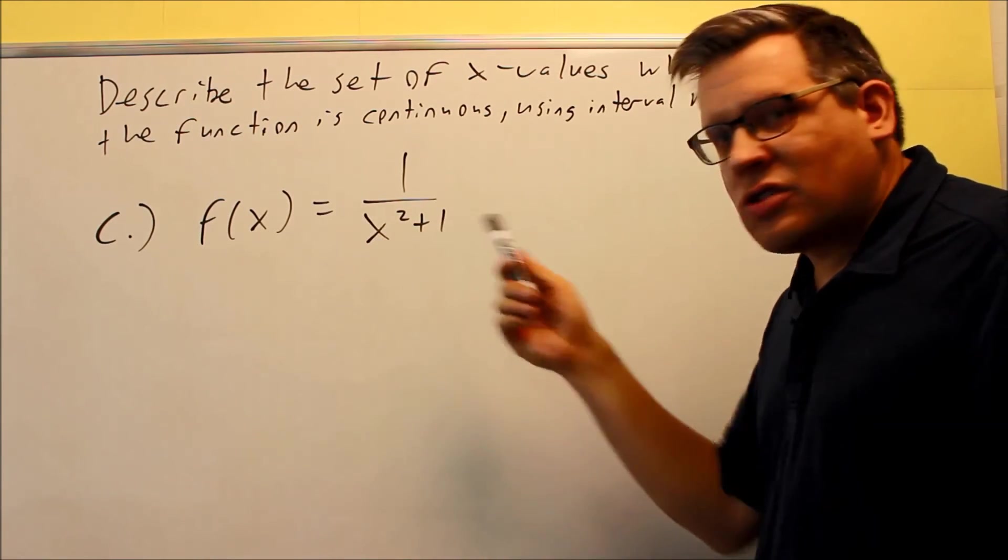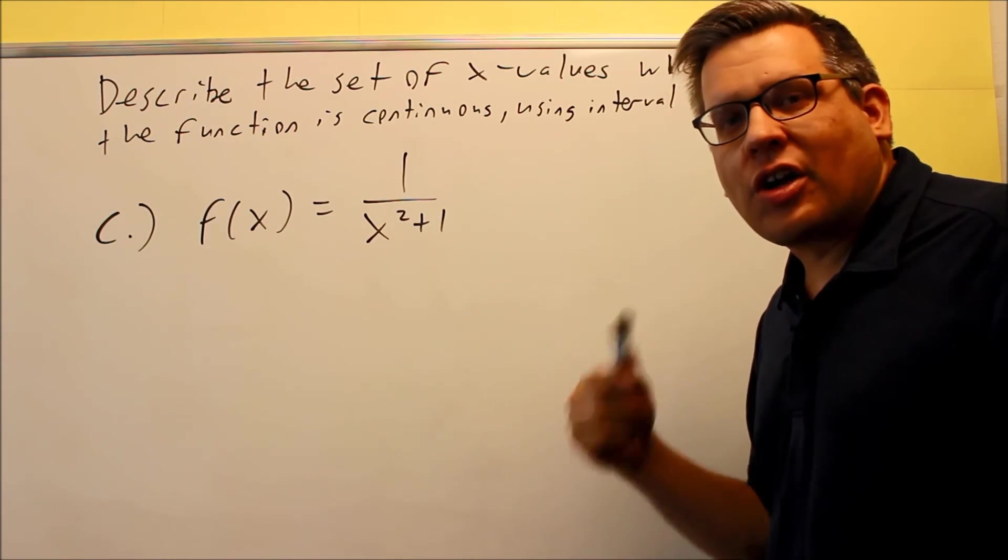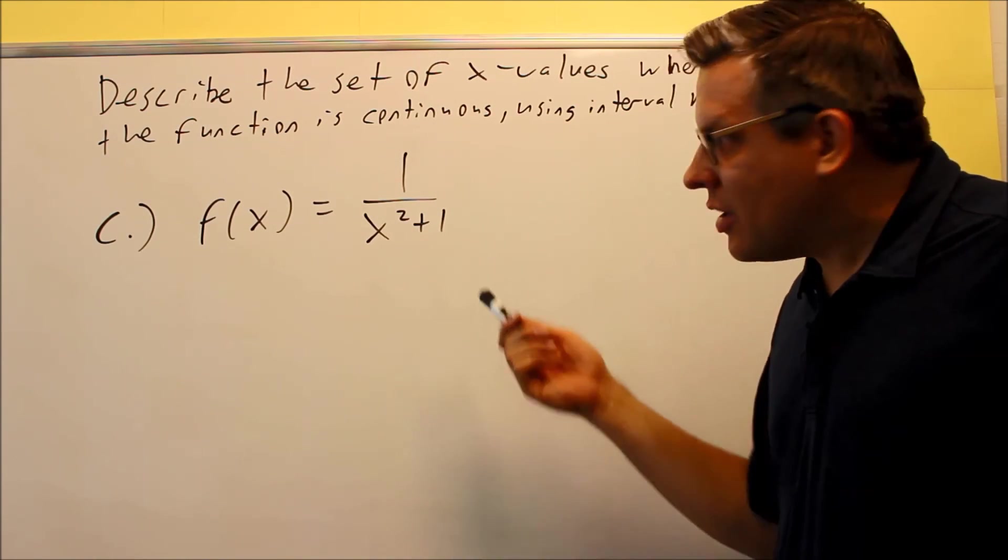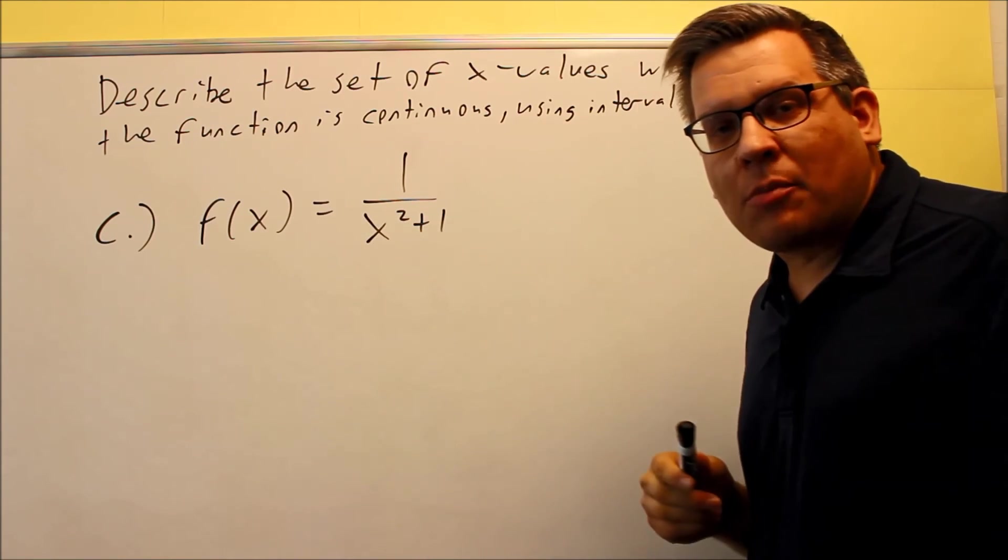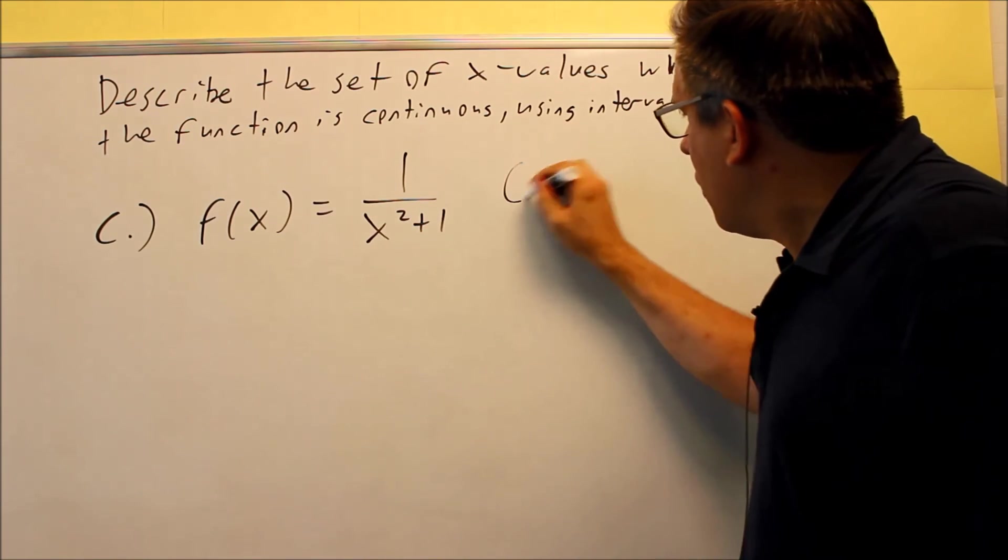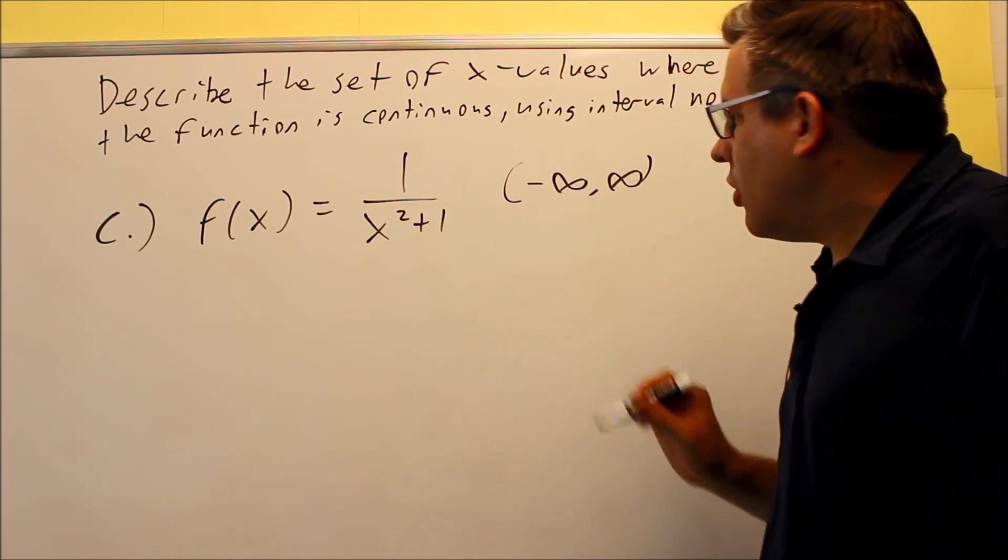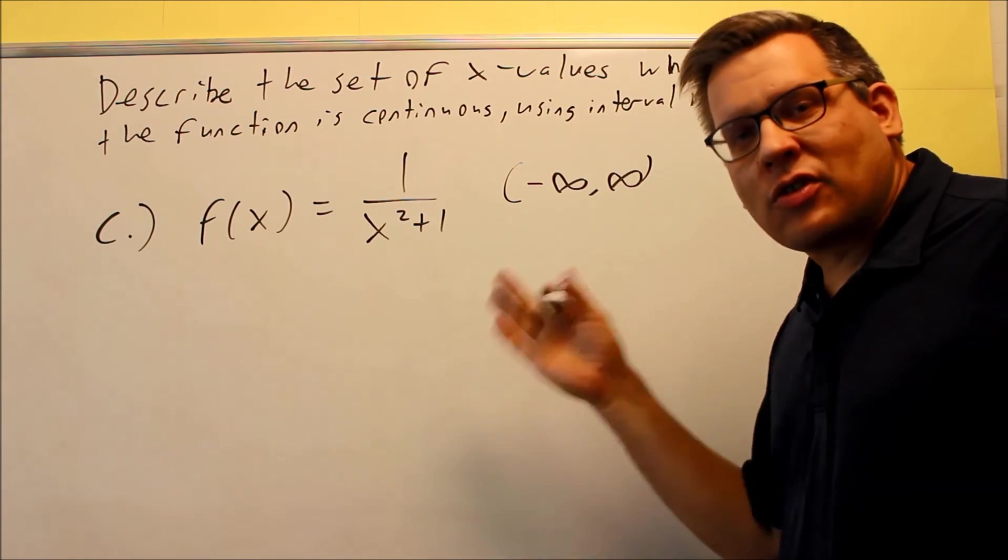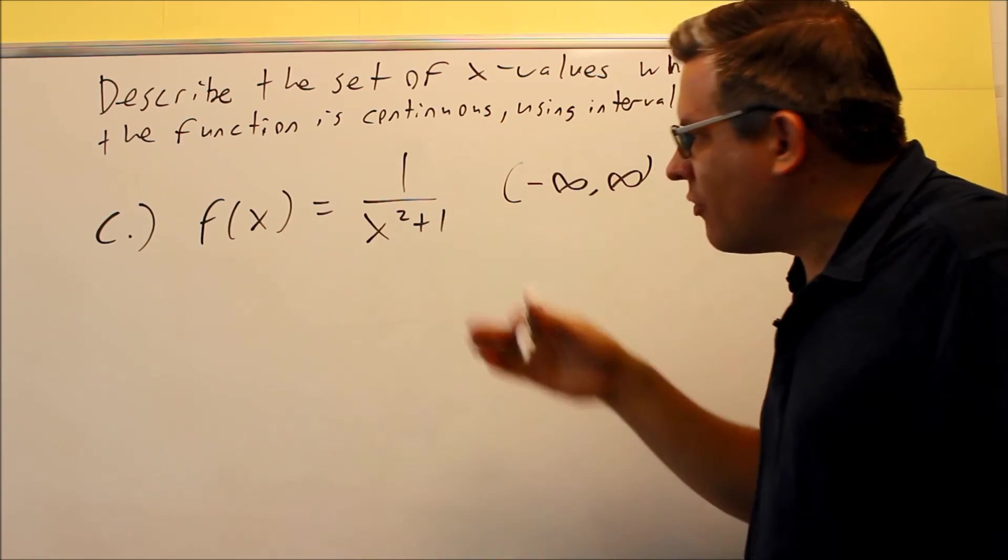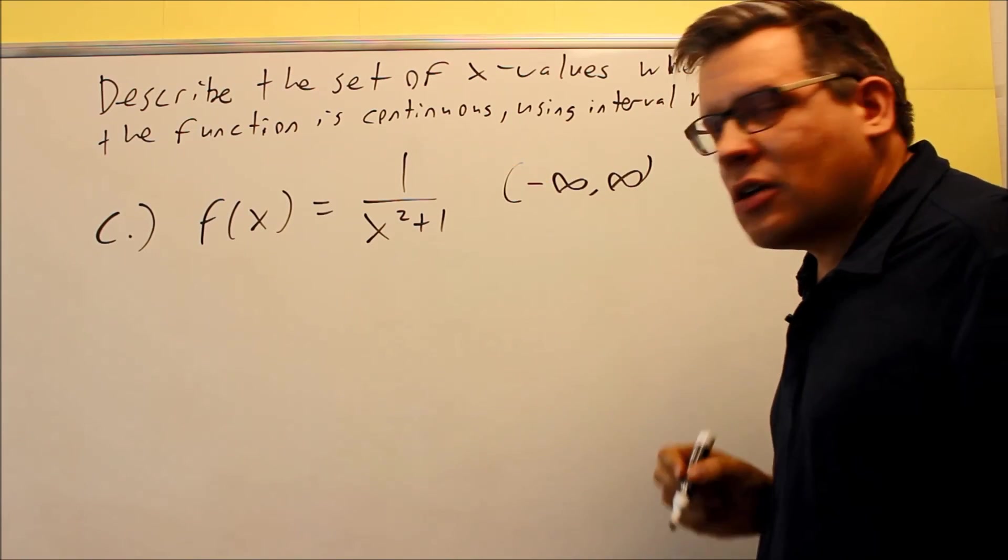If you try solving this, take x squared plus 1, set it equal to zero, you're going to get an imaginary number as the answer. That means that it's not possible for the bottom to ever be zero. So this is another one where we're going to put negative infinity to positive infinity. That means that it's continuous for every single number. There's no chance of us ever dividing this and getting a zero on the bottom.